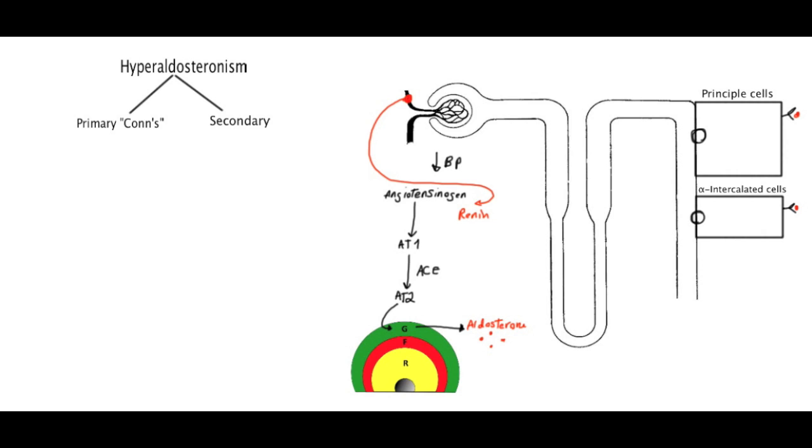Now on principal cells, we are going to reabsorb sodium, and water always follows sodium. At the same time, we're going to exchange that sodium with potassium. So we're going to be secreting potassium in the lumen of the nephron. And on the alpha-intercalated cells, we're going to secrete hydrogen ions into the lumen.